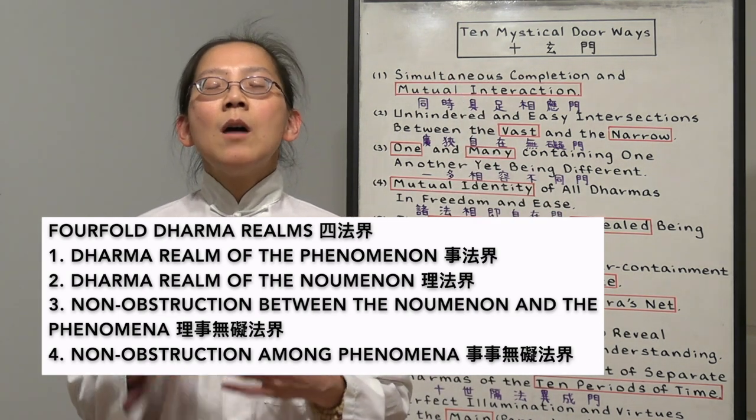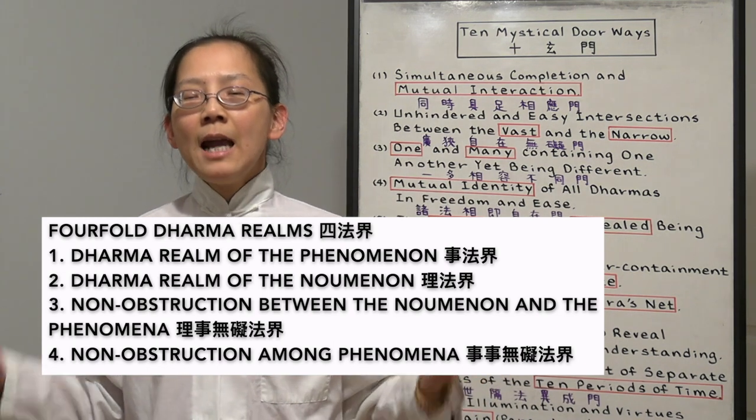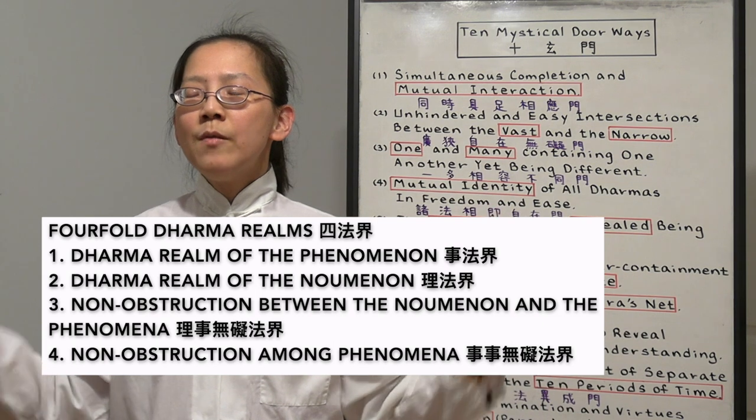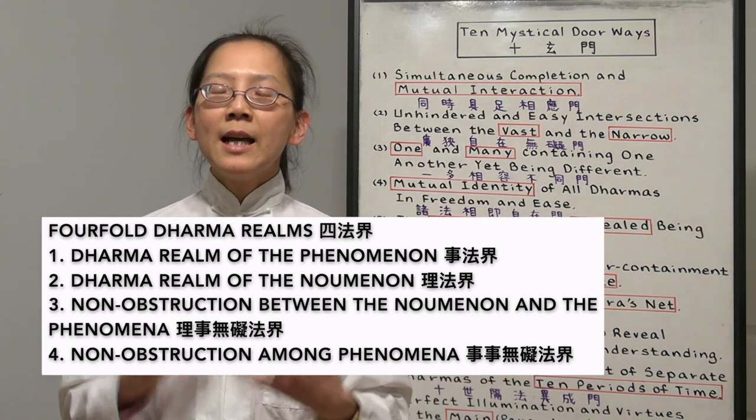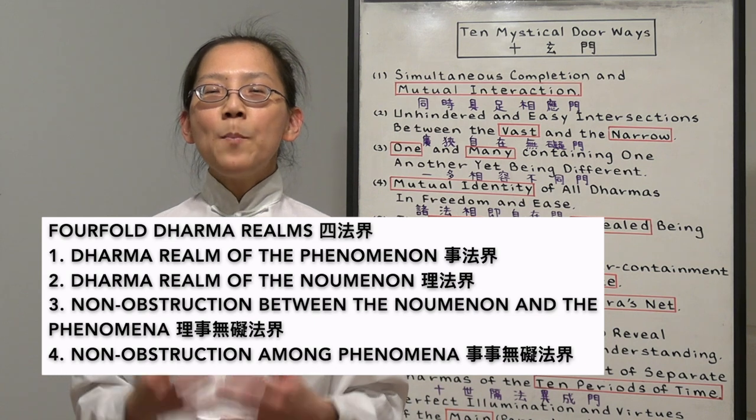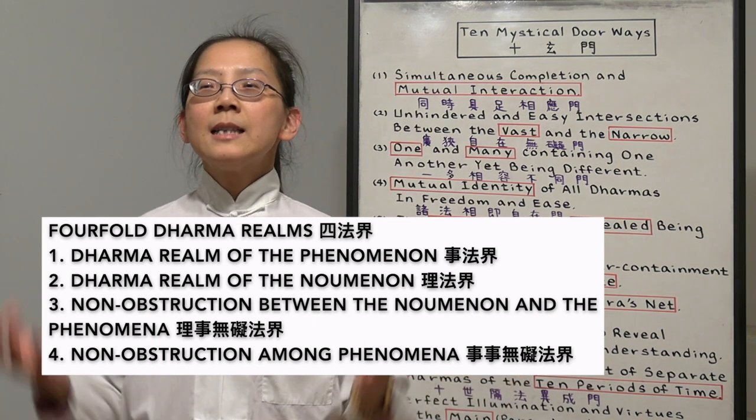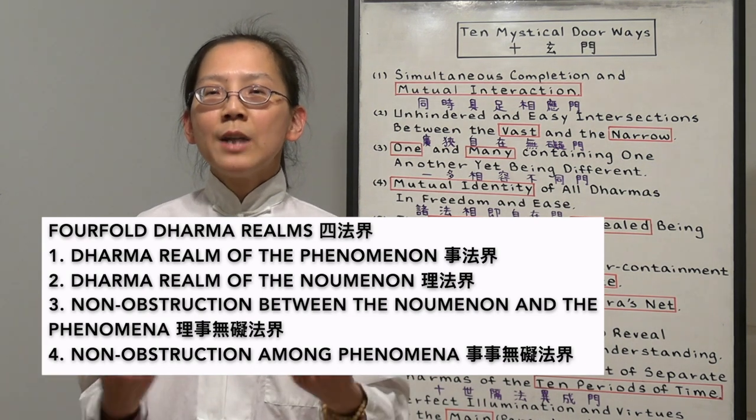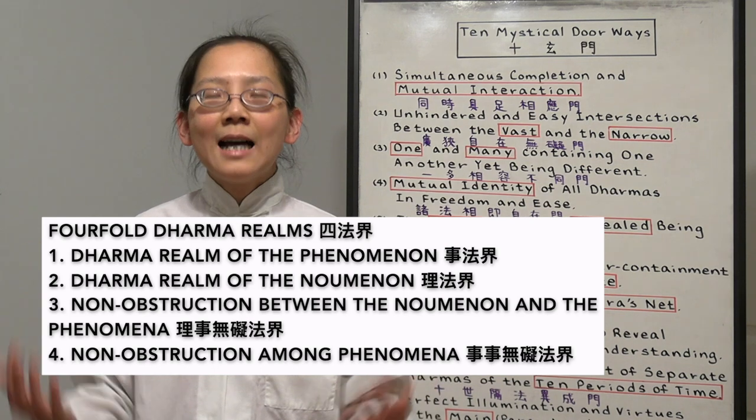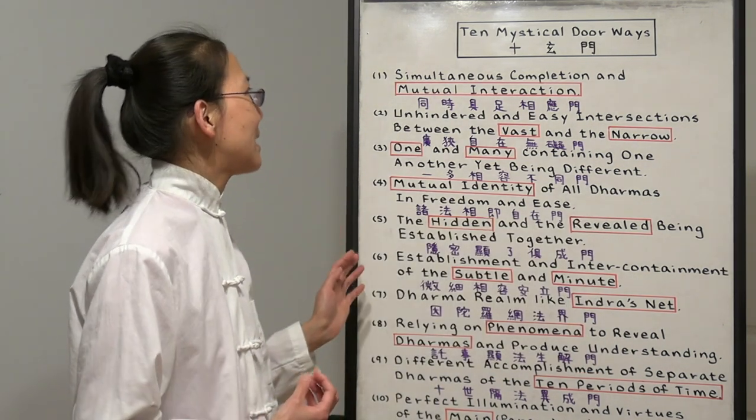Lastly is the world of non-obstruction among all phenomena. In every physical world phenomena, it is resembling our true Buddha nature. So we want to go back to this world where all the phenomena is our true Buddha mind. So always see the true nature in our daily lives. Now let's look at the 10 mystical doorways.